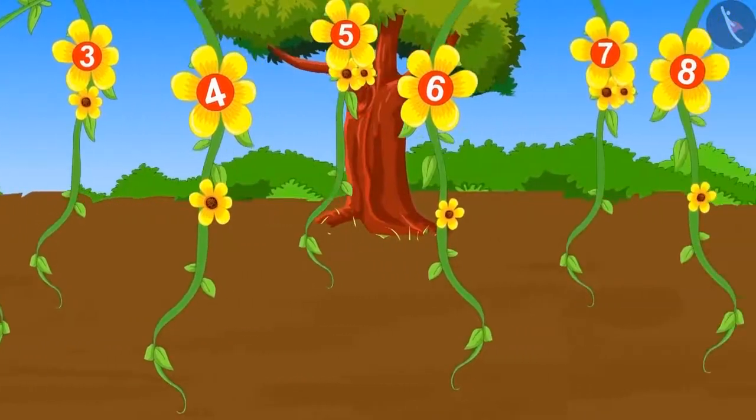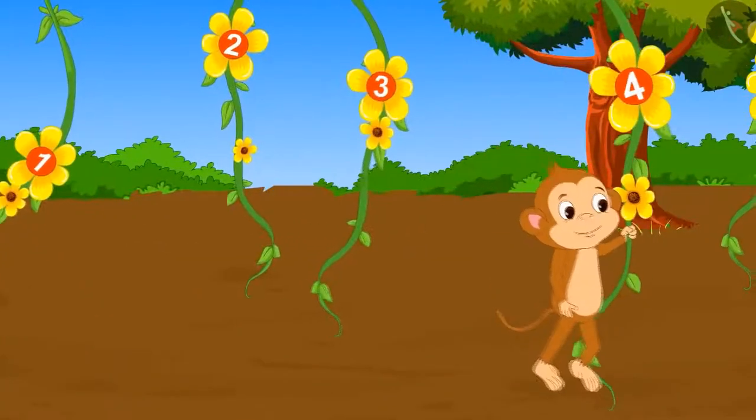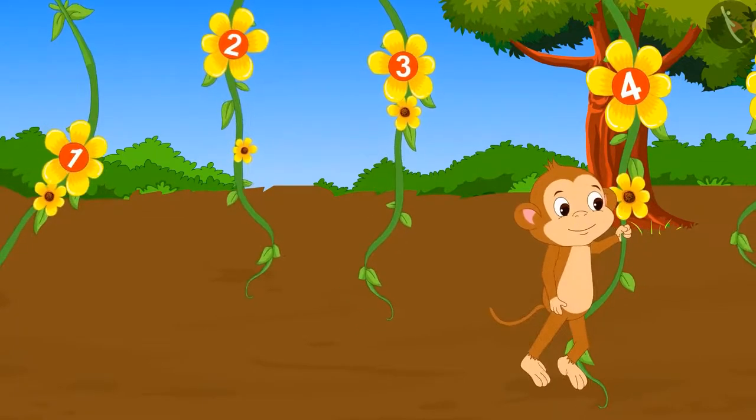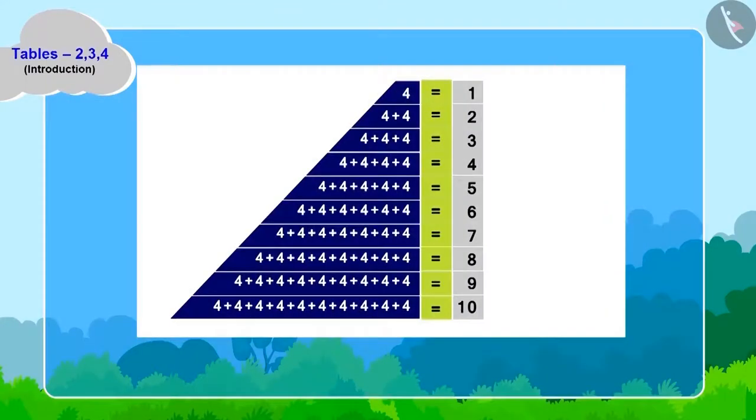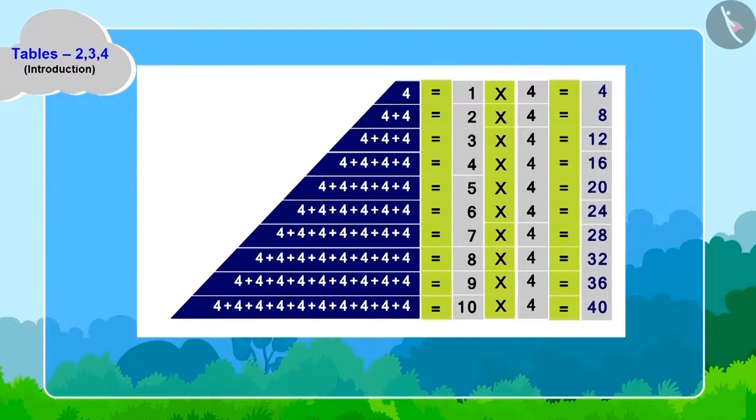Babban can cross four creepers in one jump. He took the first jump and hung to the fourth creeper. Now, can you make the table of four by adding four to each of babban's jump? Oh, wow! Table of four is ready!